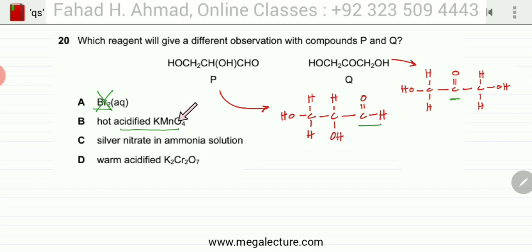KMnO4 is going to give a color change of purple to colorless with both of them. K2Cr2O7 is also going to give a color change of orange to green with both of them. They are going to react with both, so B and D are not possible since they are reacting with both of them.